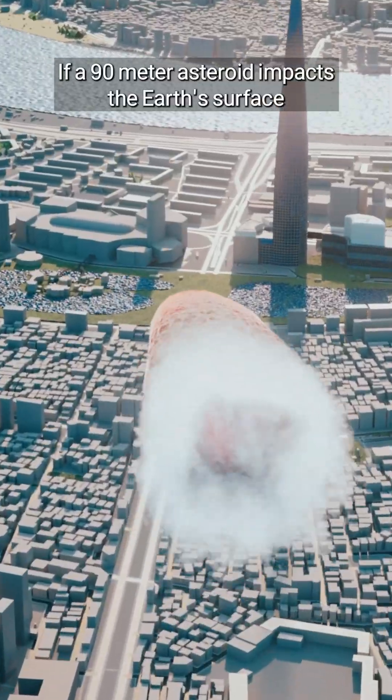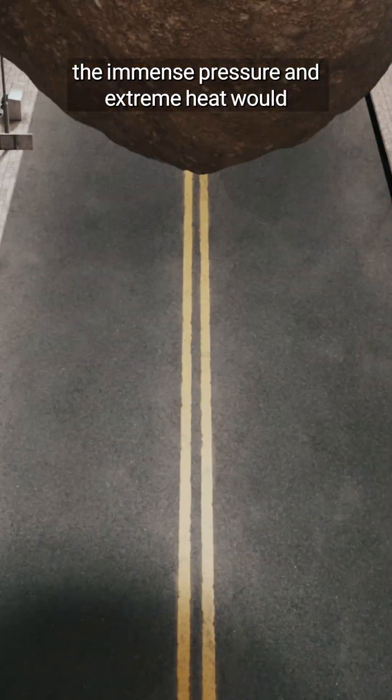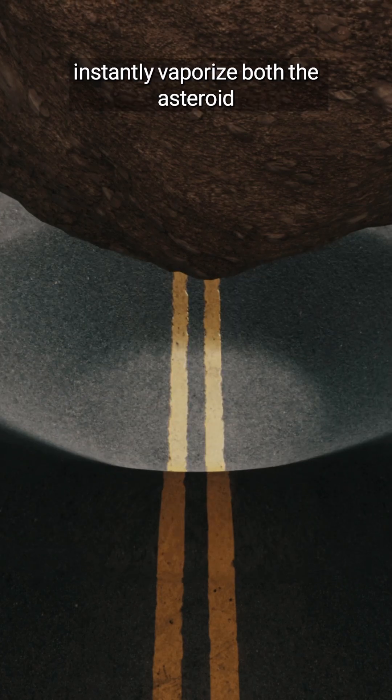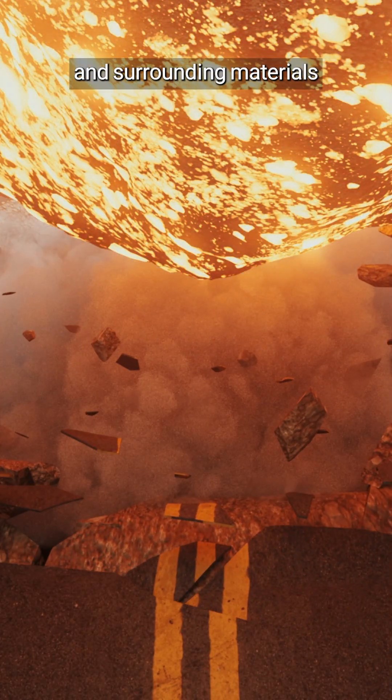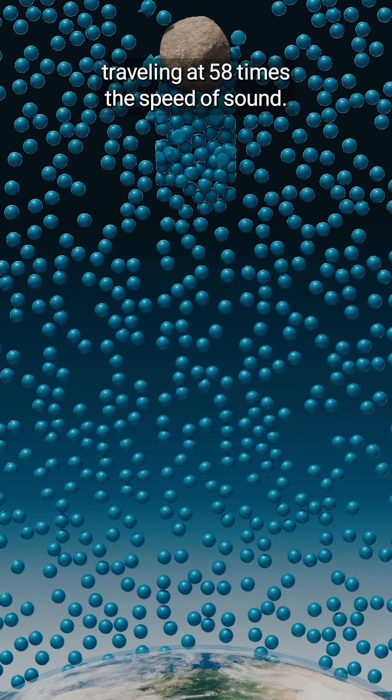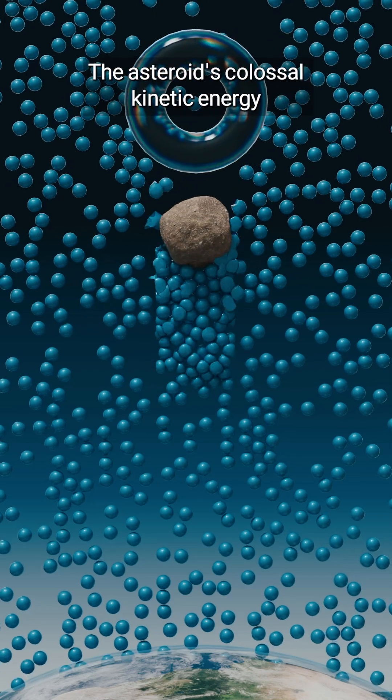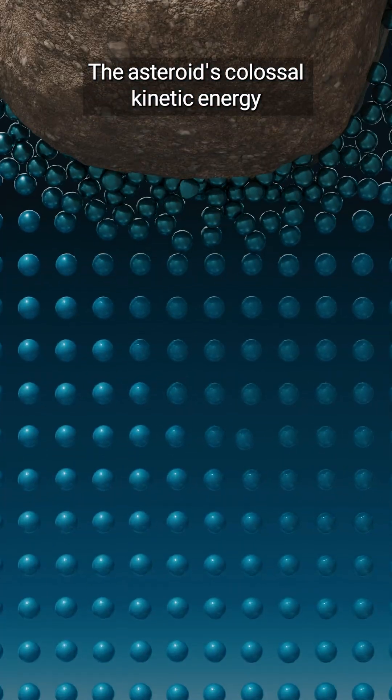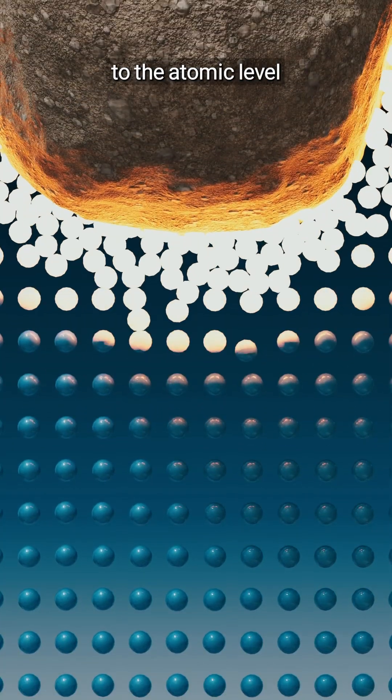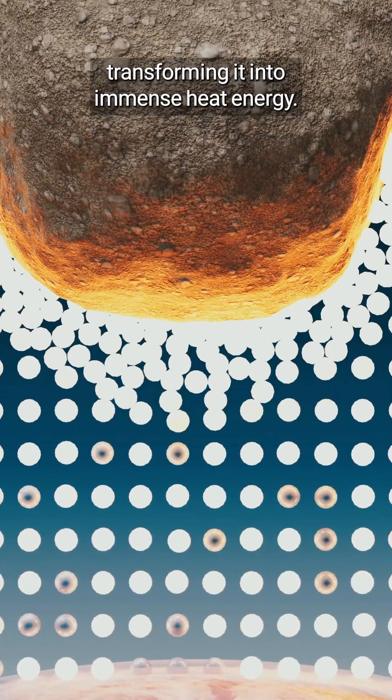If a 90-meter asteroid impacts the Earth's surface, the immense pressure and extreme heat would instantly vaporize both the asteroid and surrounding materials. Traveling at 58 times the speed of sound, the asteroid's colossal kinetic energy would break down materials to the atomic level, transforming it into immense heat energy.